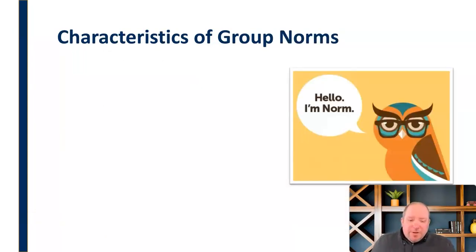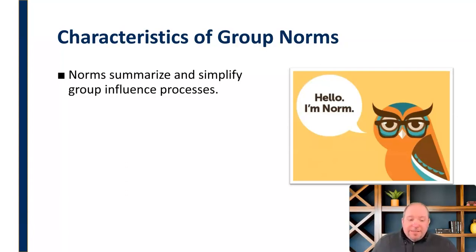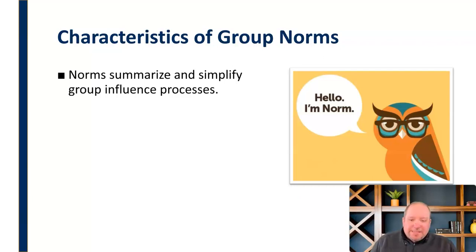Some characteristics and things to note about group norms — important factors here. First, norms summarize and simplify group influence processes. They just very simply simplify things and give us some guidelines. We don't have that paralysis by analysis, where we're not sure about how to handle something. The group has already determined this. This is how things are going to be handled, how we're going to operate in this group and team. So you don't have to worry about that — we can just do it, and we don't have to recreate the wheel every time.